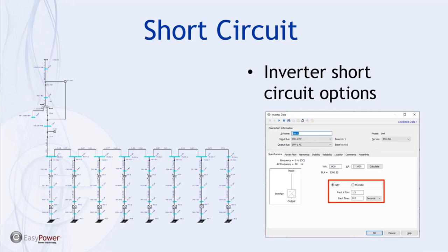Inverter momentary contributions may be as great as three to five times the full load amps, but quickly decay within moments to 1.3 to 1.5 times full load amps. Depending on which portion of the waveform you're interested in, you may enter different multipliers. For arc flash you may be interested in the most conservative high currents, but for protective device coordination you may be interested in lower contribution levels — these are controlled under the inverter tabs.